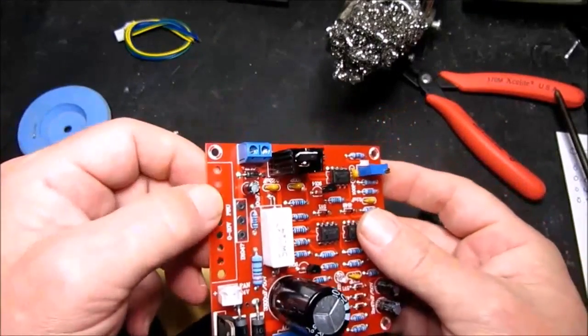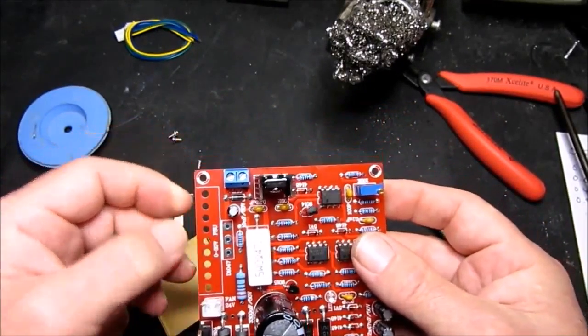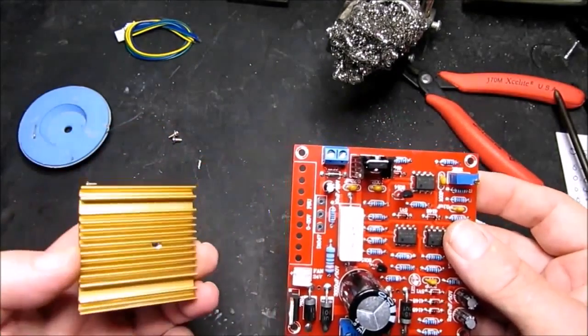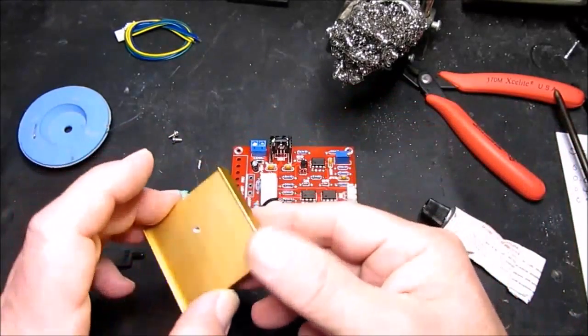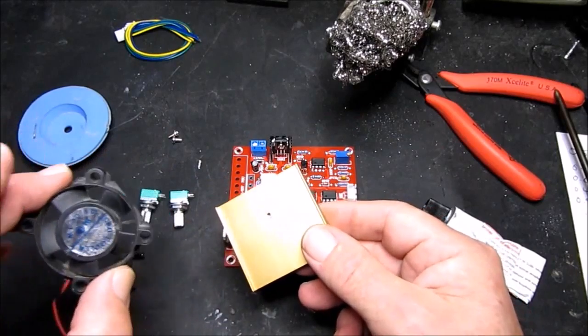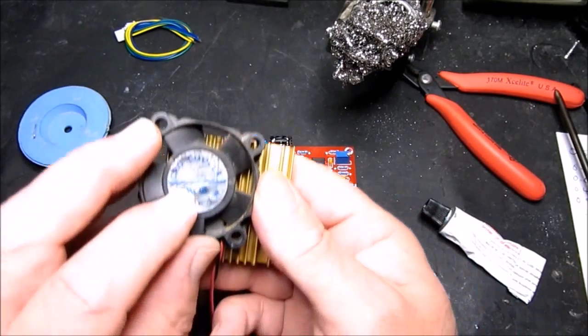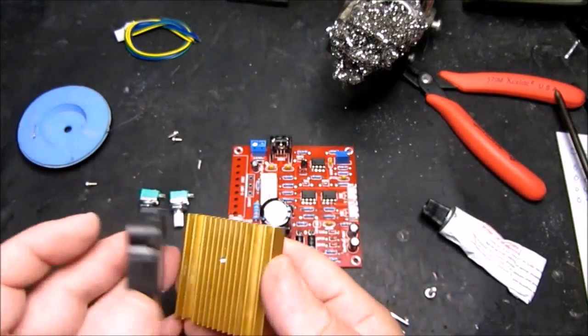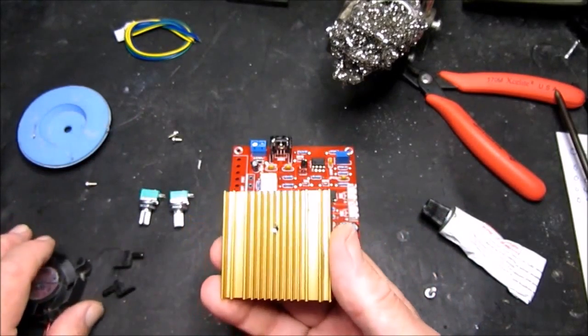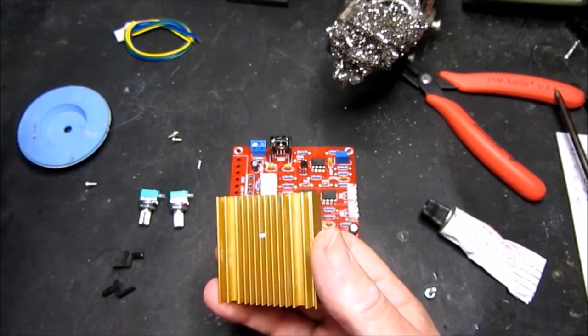So the last thing that we have to do is to mount the main power transistor here. And I did find my box of bits, a very old, it's probably an 8186 CPU cooler. And I've just tapped a hole in there to take the screw.